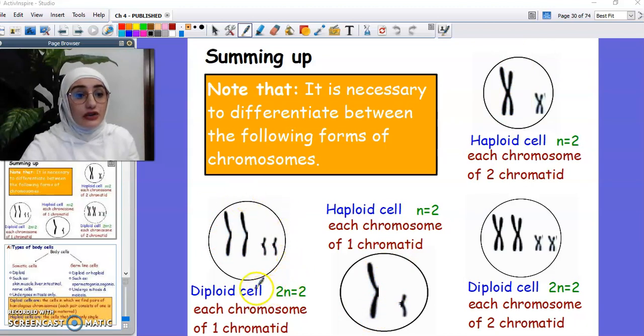Whereas in a diploid cell, we can see the pair of socks, the two copies. So we can see from each chromosome we have two copies here, and the other chromosome we have two copies as well. So it's necessary to differentiate between the following forms of chromosomes. If each chromosome is made up of one copy in a cell, it means that this cell is haploid. Whereas if each chromosome is made up of two copies, this means that the cell is a diploid cell.